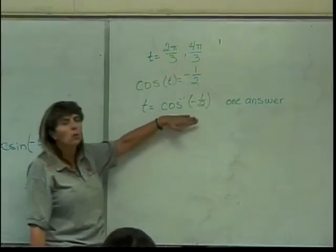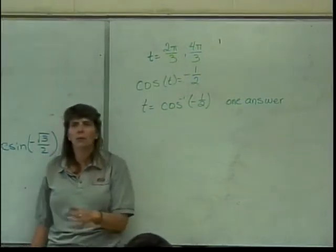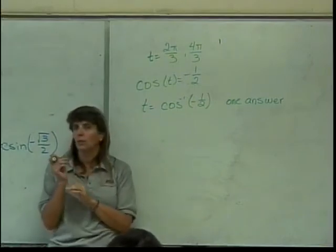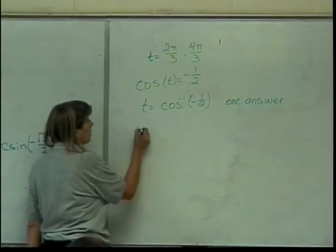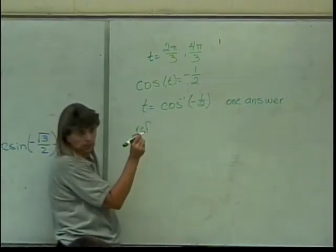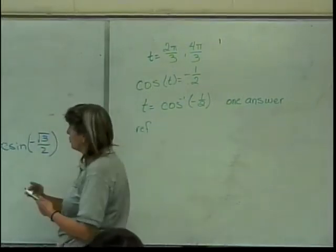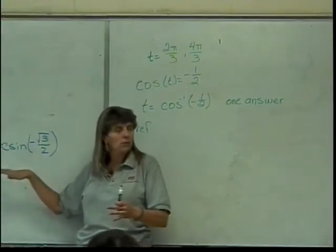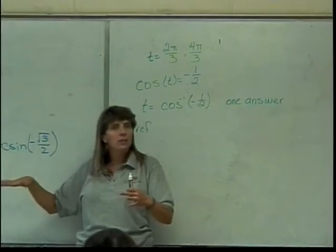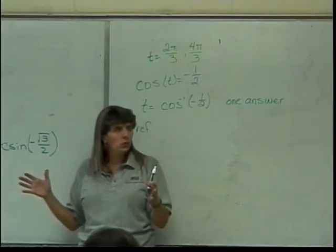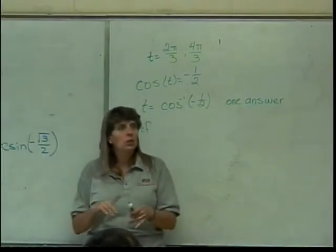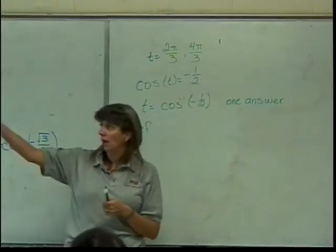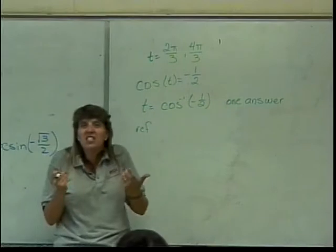Now I'm in quadrant two. How do I find my reference angle in quadrant two? With the cosines, I get to skip a step — it's kind of nice. I don't have to do this piece where I had to add the two pi to it, because every one of my cosine inverse answers already gets me one of the answers, every time. Because cosine inverse always comes out between zero and pi. So I have one of my answers — half of it's done.